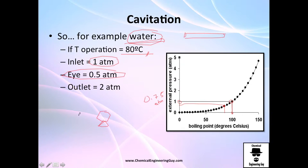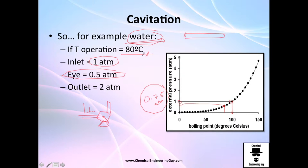If the inlet pressure of the fluid is one atmosphere, that's okay. But when you go inside the eye, you are going to experience a pressure drop — which is very common and I will explain it later. In that pressure drop, you might reach 0.5 atmospheres. Since the vapor pressure of water at 80 degrees Celsius is 0.75 atmospheres, the water is going to evaporate, which is very bad for the pump — especially for the impeller, because of cavitation.